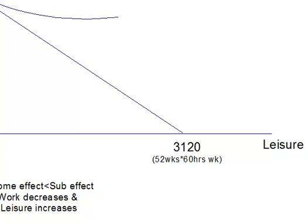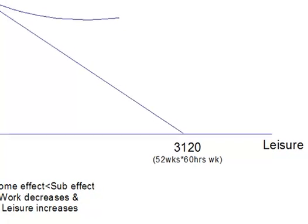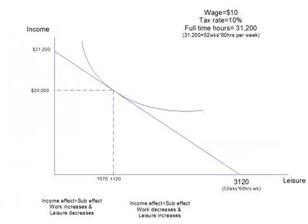Now let's tax this person at 10%. There's our tax — it rotates the budget constraint down. So the more you earn, your tax is proportional, but the more you earn, the more you pay, so it rotates down like that.